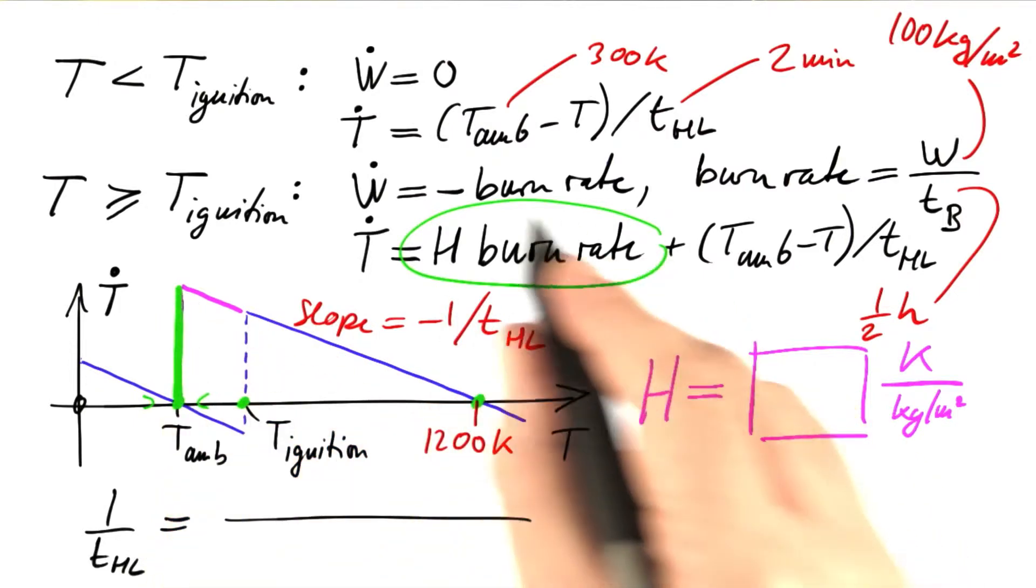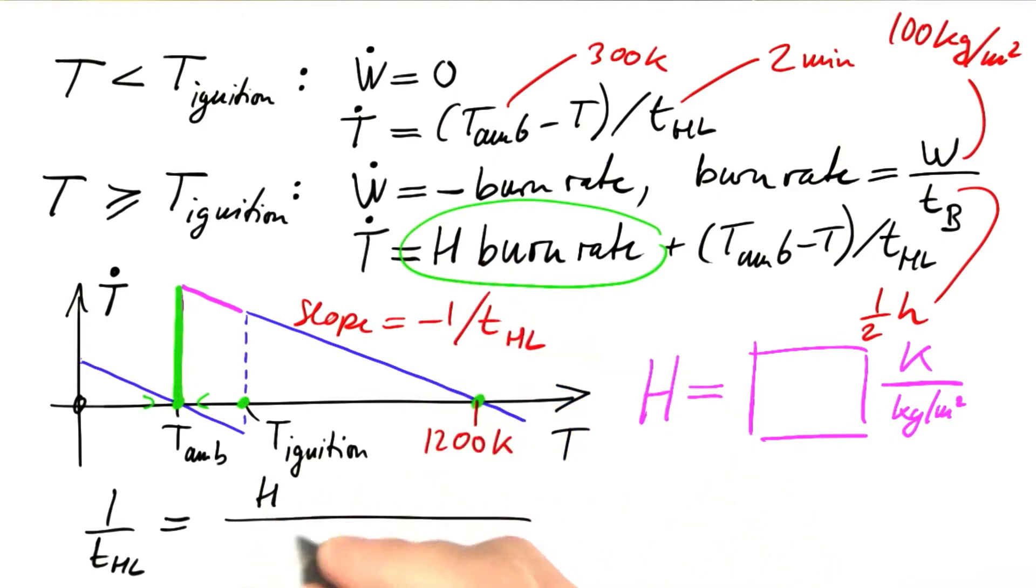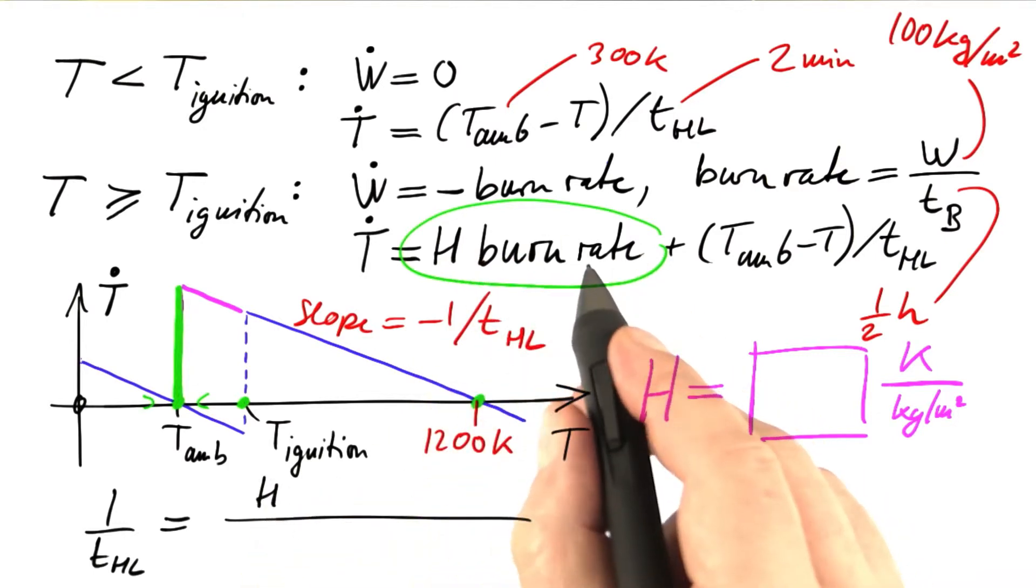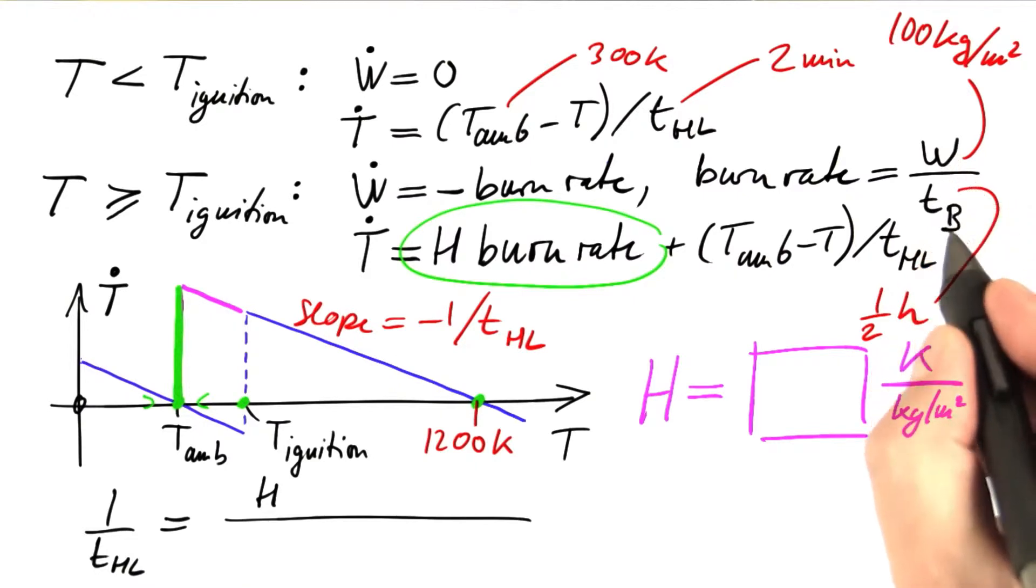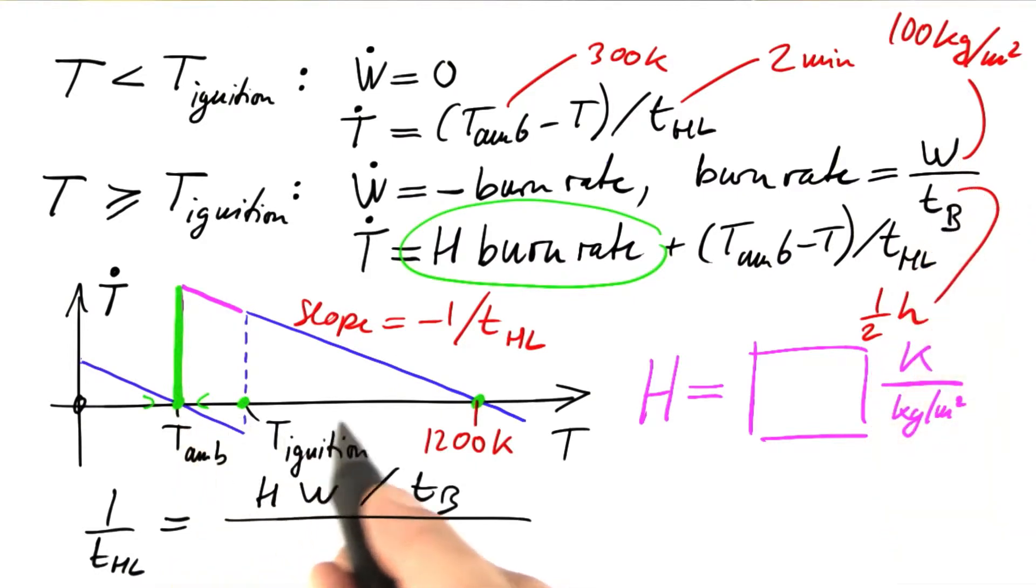The vertical length, the green line, is h times the burn rate, and the burn rate is the wood density over the time constant of burning. And the horizontal length is 1,200 Kelvin minus the ambient temperature.